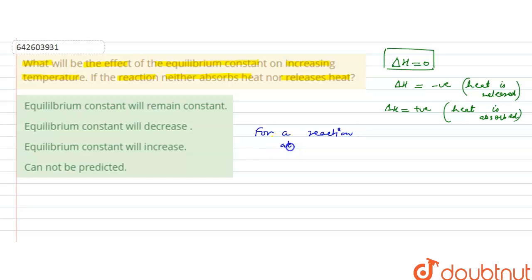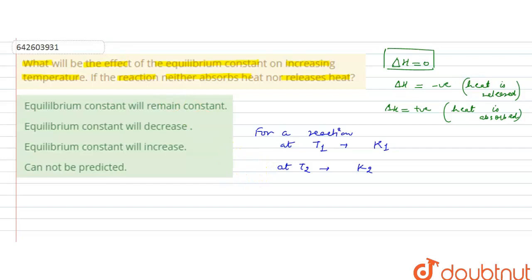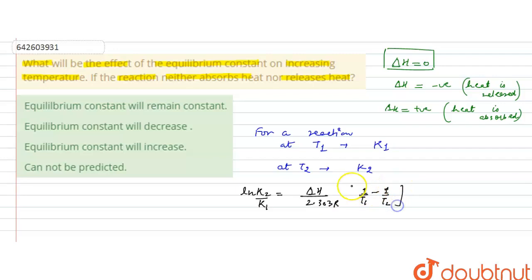Now, for a reaction at temperature T1, let's say its equilibrium constant is K1, and if the temperature is increased to T2, its equilibrium constant will be K2. These K1 and K2 are related to each other as: ln(K2/K1) = ΔH / (2.303R) × (1/T1 − 1/T2). So they are related when their temperatures and equilibrium constants are as given.